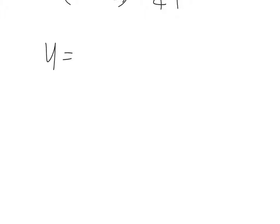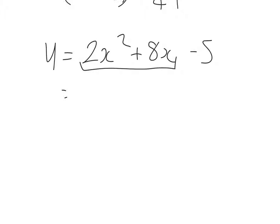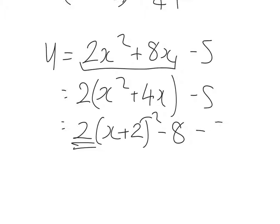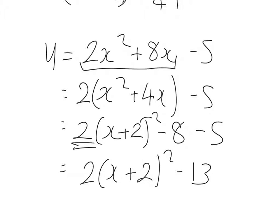We're going to complete the square for 2x squared plus 8x minus 5. First of all, we'll take out a numerical common factor from the first two terms, so that's 2 bracket x squared plus 4x, minus 5. It's then time to complete the square. So, half the 4 down to 2, create a square bracket. 2 squared is 4, but we need to multiply that by 2, so that means we need to get rid of 8 and still take away 5. Final answer is 2 bracket x plus 2, all squared, minus 13.